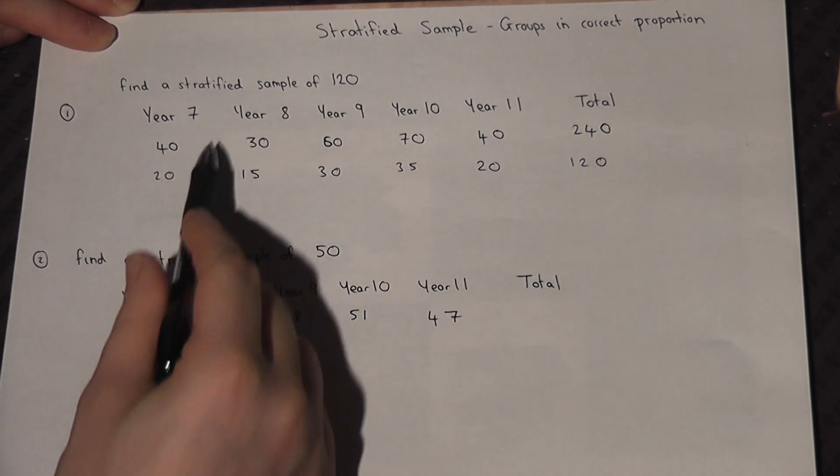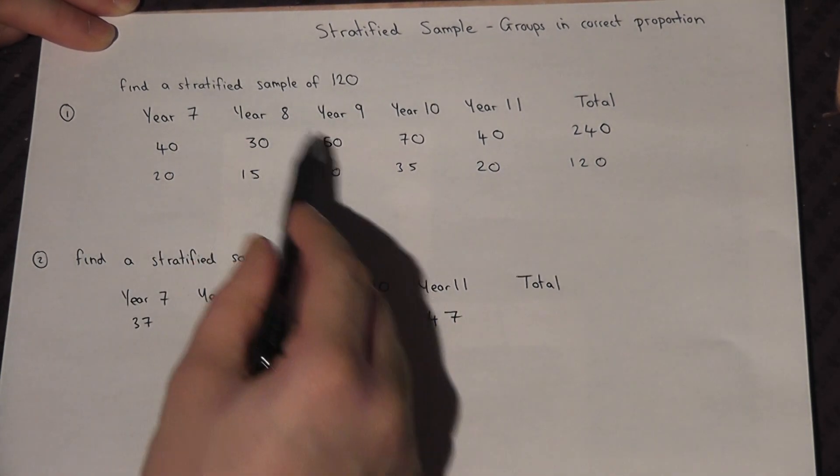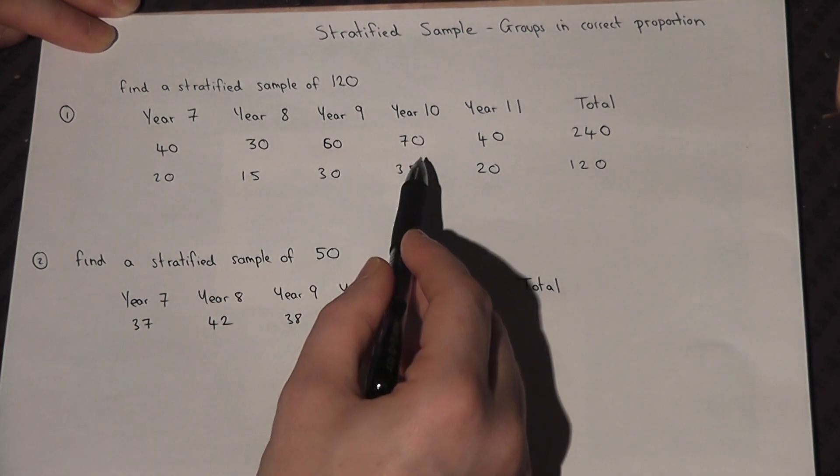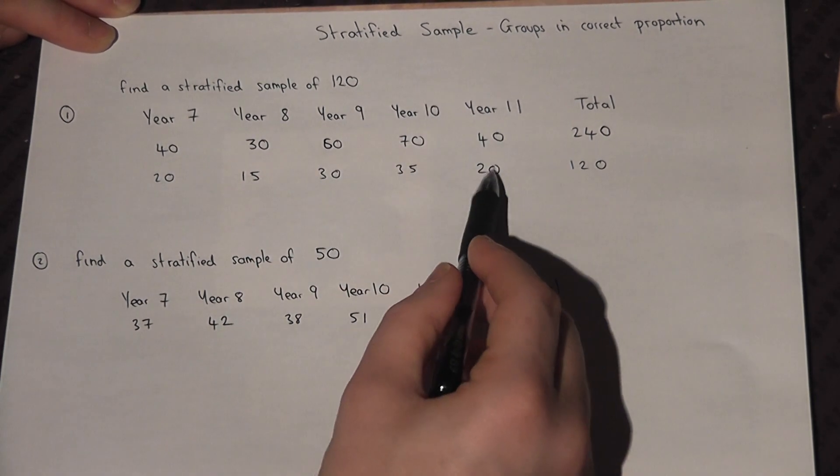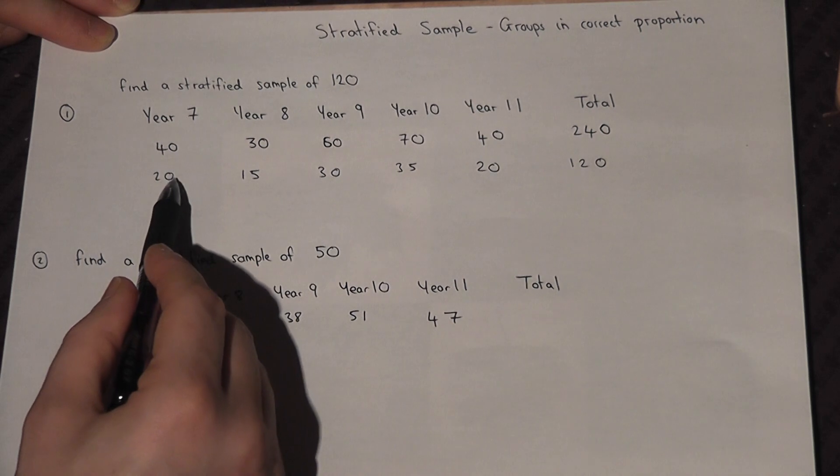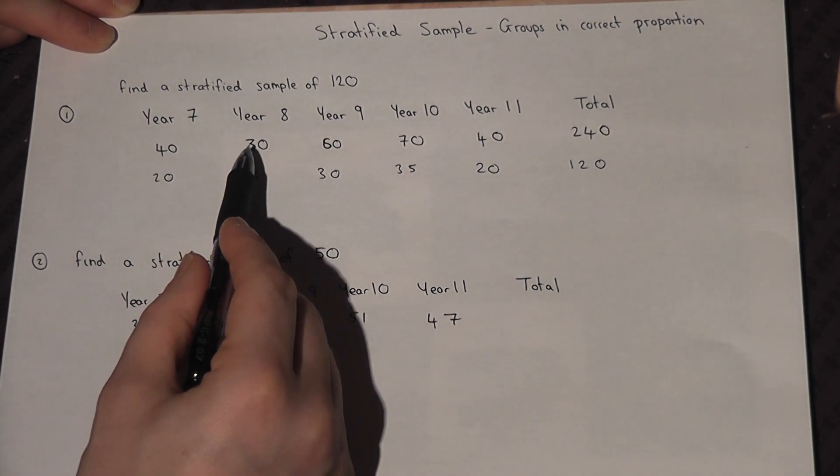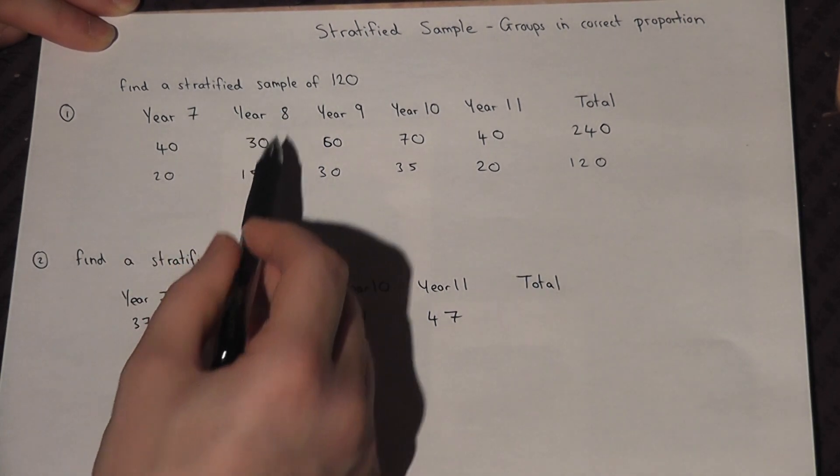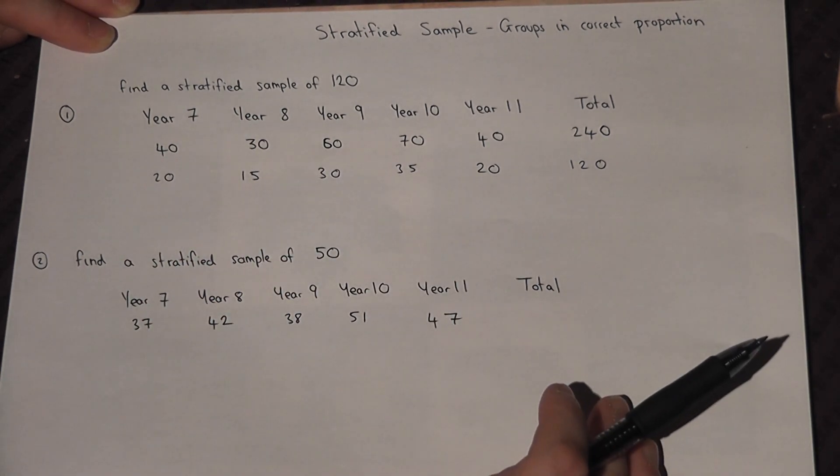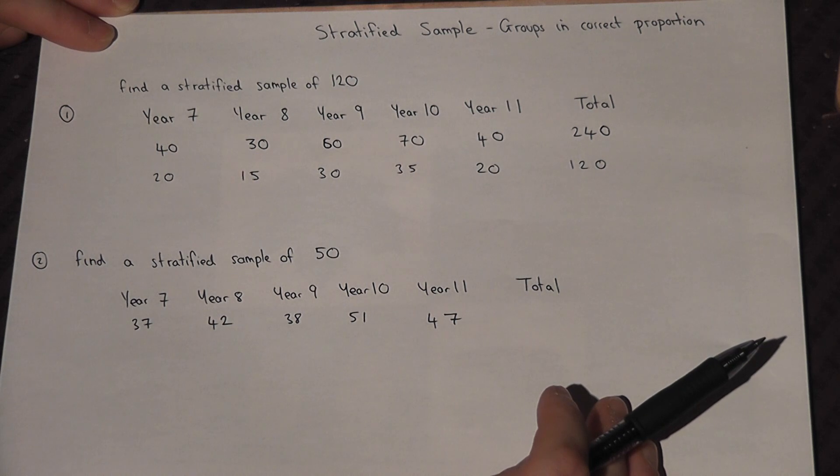So I ask 20 year 7s, 15 year 8s, 30 year 9s, 35 year 10s, and 20 year 11s. I pick these pupils at random from each of the year groups, but I have ensured that the year groups are kept in the correct proportion. So this reduces bias in the sample.